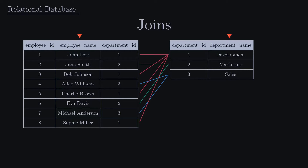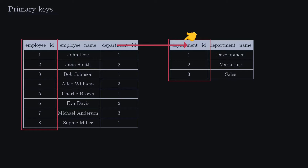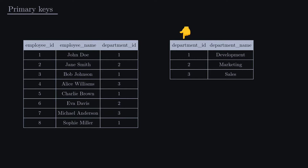To understand joins, you will need to know about primary keys and foreign keys. A primary key is a special column or set of columns that uniquely identifies each row in the table. It is unique for each row and cannot be empty. It serves as a reference for establishing relationships with other tables. In the employees table, the primary key is the employee ID, while that of the department is the department ID. To establish a relation between a row in table A and a row in table B, there needs to be a column in table A that contains the primary keys of the corresponding rows in table B. This is called a foreign key.